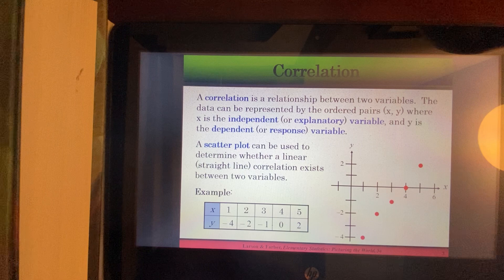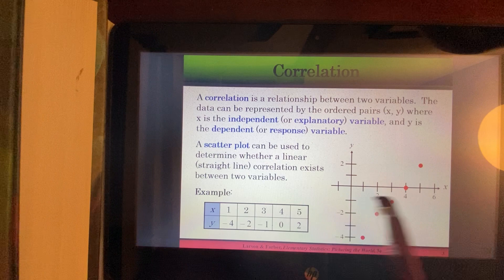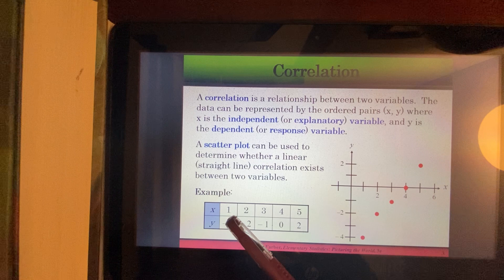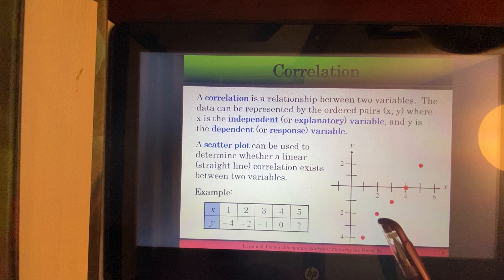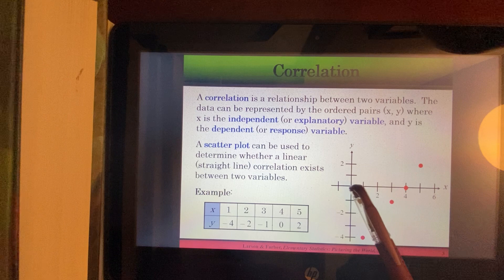Okay, so remember your x's are going across, the y's go up and down. So, to plot the point 1, negative 4 from the origin, we move over one unit, down 4. To plot 2, negative 2, we go over 2, down 2. 3, negative 1. 4, 0. 5, up 2.